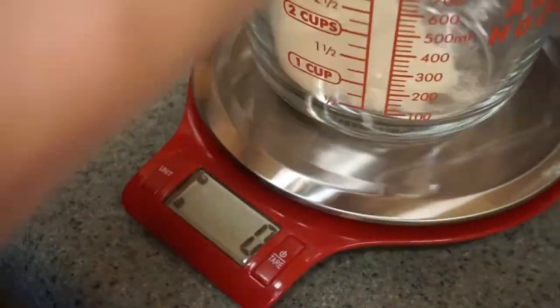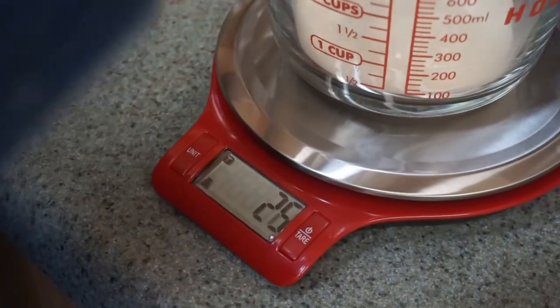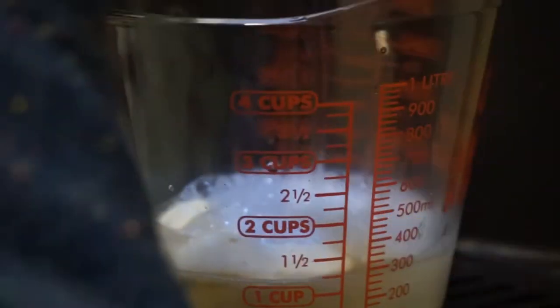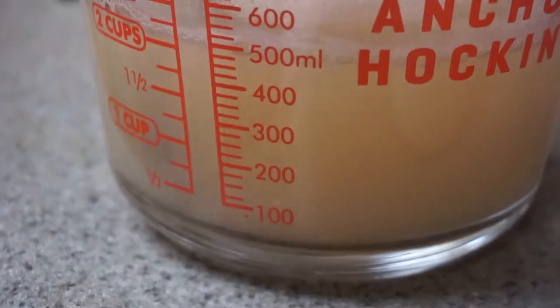Next, measure out 25 grams of agar media with a digital scale. Mix into 500 milliliters of warm water into an easy pour measuring cup, ensuring all the agar has dissolved.